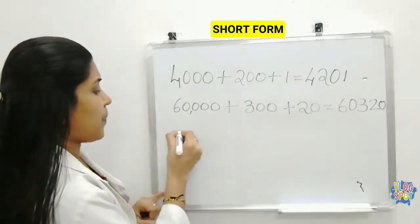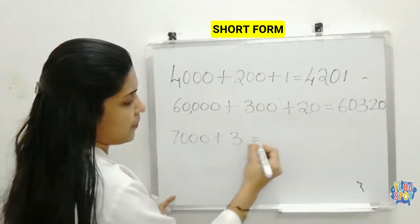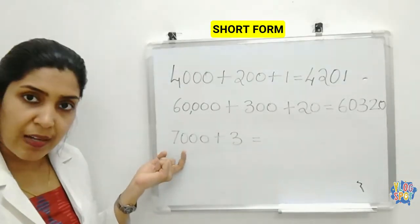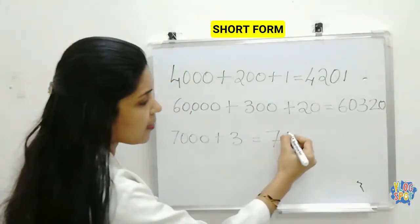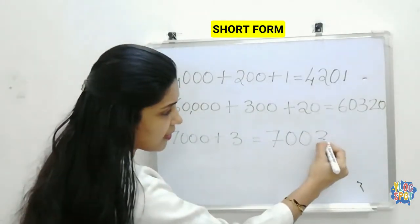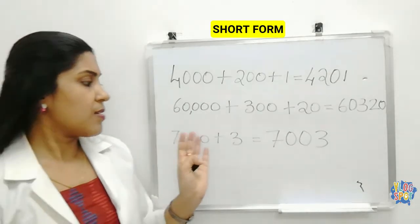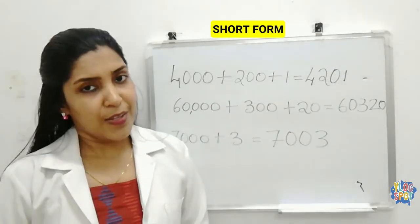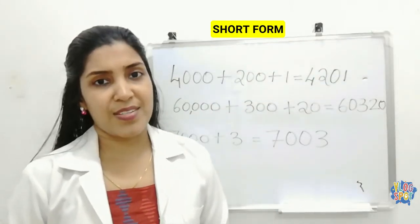One more example: 7,000 plus 3. How to do this? 7 is in the thousands place. There is no hundreds place number. There is no tens place number. Then 3 is in the ones place. So the short form is 7,003. This is the way of converting expanded form into short form. Hope you understood the concept. Thank you so much.